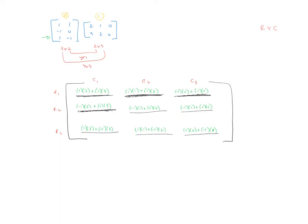Cleaning this up, we get five, three, zero, negative two, negative one, zero, negative one, negative one, and zero. So that's the resulting product of those two matrices. It looks like a bit of a mess but it's not too bad. I'd encourage you to try the next example and we'll talk about it in class, because this one is a little difficult to show on screen.